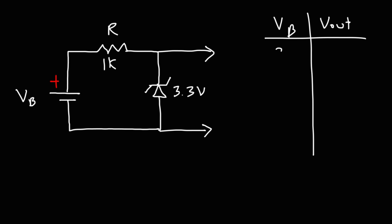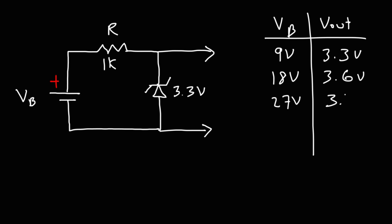When I use a 9 volt battery, the output voltage I read on my meter with this circuit was 3.3 volts. Increasing the battery's voltage to 18 volts, the output voltage was about 3.6 — it increased from 3.3 to 3.6. Changing the voltage to 27, the output voltage went up to 3.76. So the zener diode kept the output voltage relatively constant.